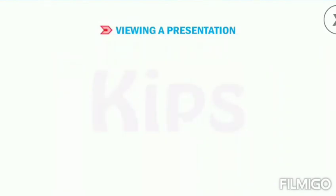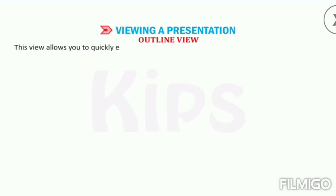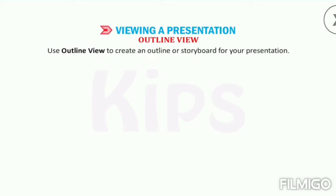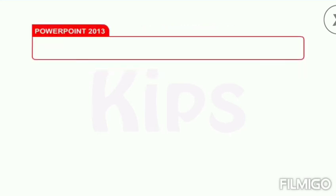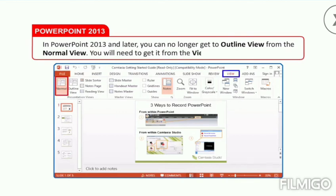The Outline view displays only the text on your slides in the Outline pane. This view allows you to quickly edit the text on the slides and view the contents of all the slides at once. Use Outline view to create an outline or storyboard for your presentation. You can get to Outline view from the View tab on the ribbon. Note that in PowerPoint 2013 and later, you can no longer get to Outline view from the Normal view — you will need to get it from the View tab.